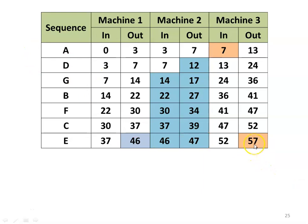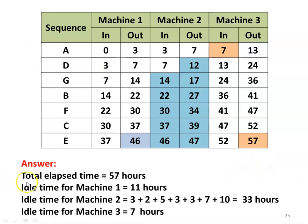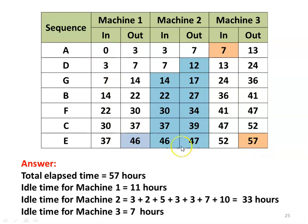The total elapsed time is 57 hours. Machine 1 is completely busy from the beginning; after the 46th hour it is waiting until the 57th hour — idle for 11 hours.